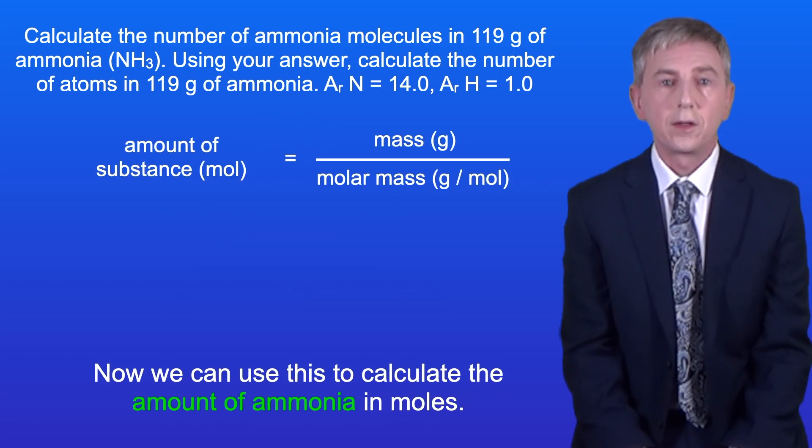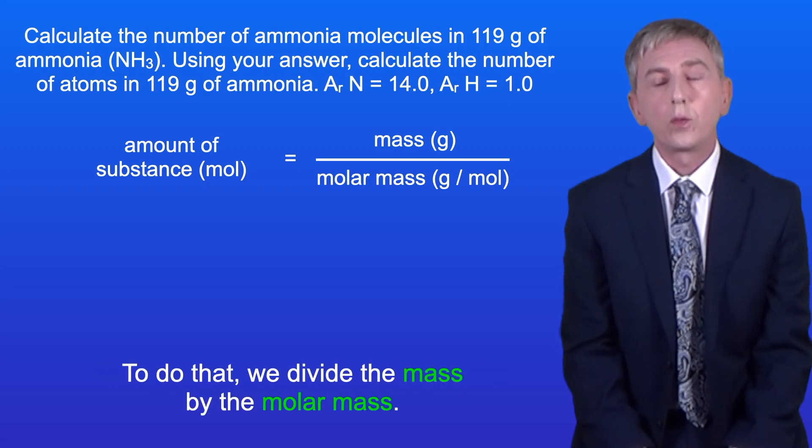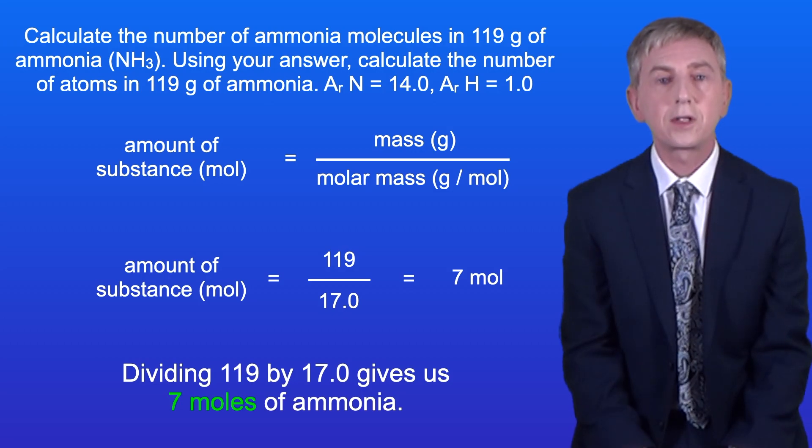So now we can use this to calculate the amount of ammonia in moles. To do that we divide the mass by the molar mass. Dividing 119 by 17.0 gives us 7 moles of ammonia.